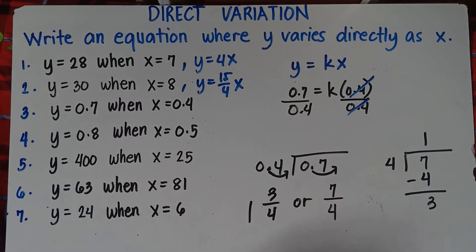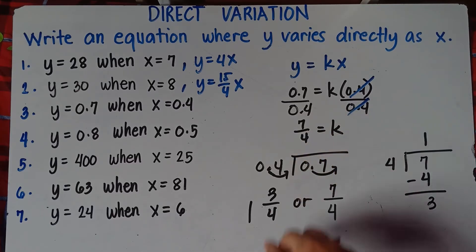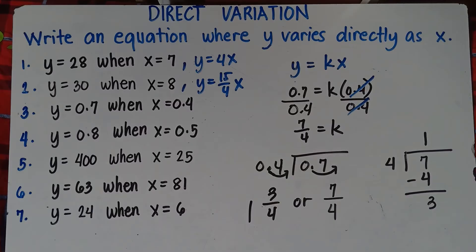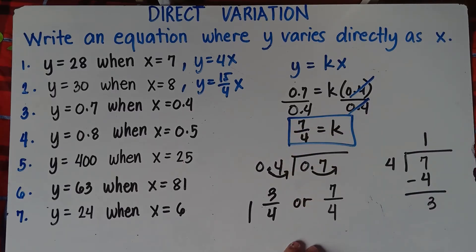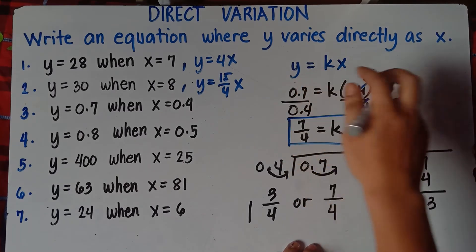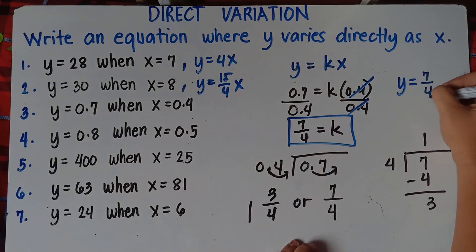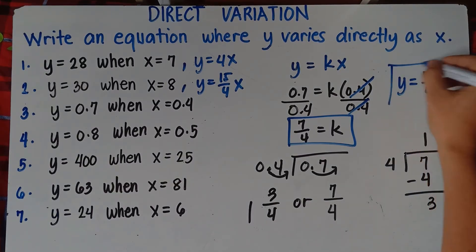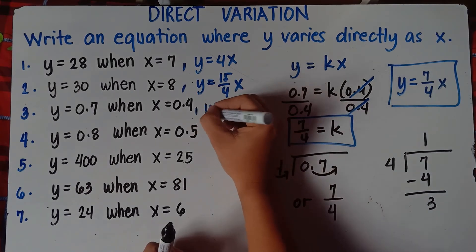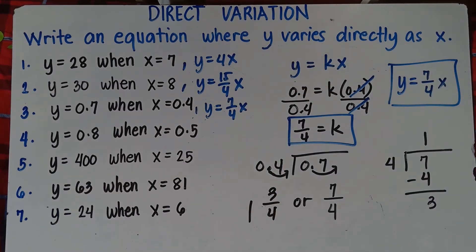So our k is 7 over 4. We cannot divide 7 by 4 without getting a decimal, so we keep it as a fraction. Once you get k, simply substitute k from this equation: y equals 7 over 4 times x. That's the answer for number 3: y equals 7 over 4 x.